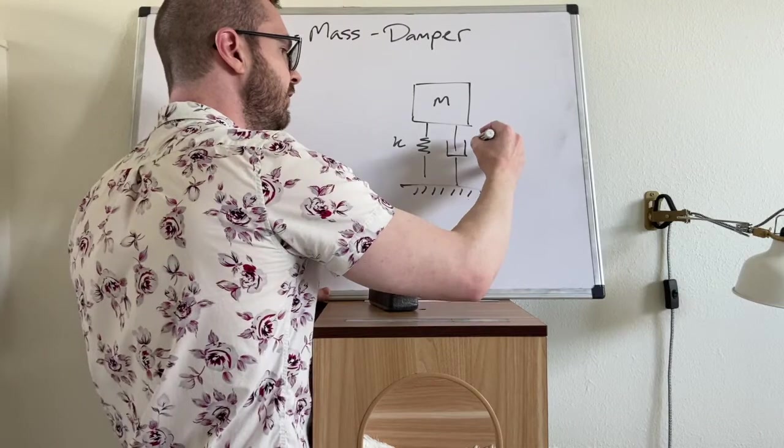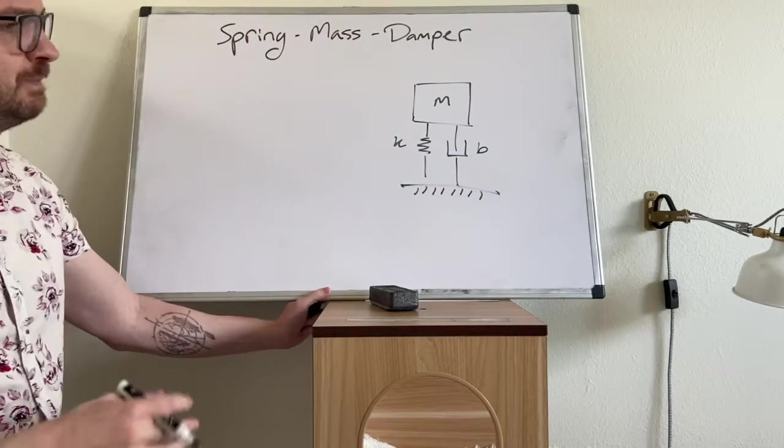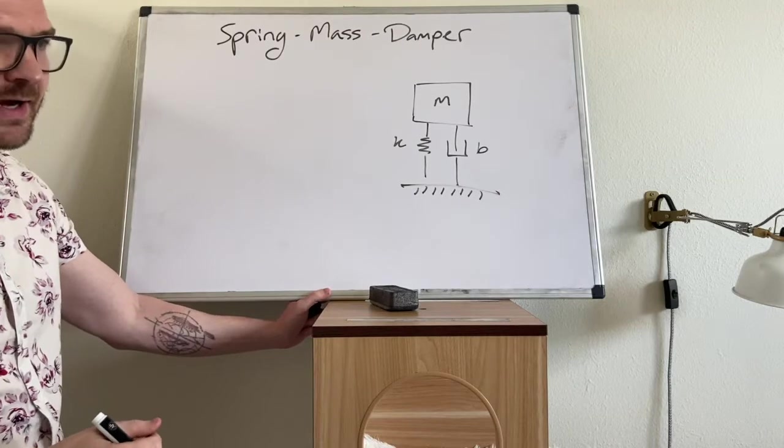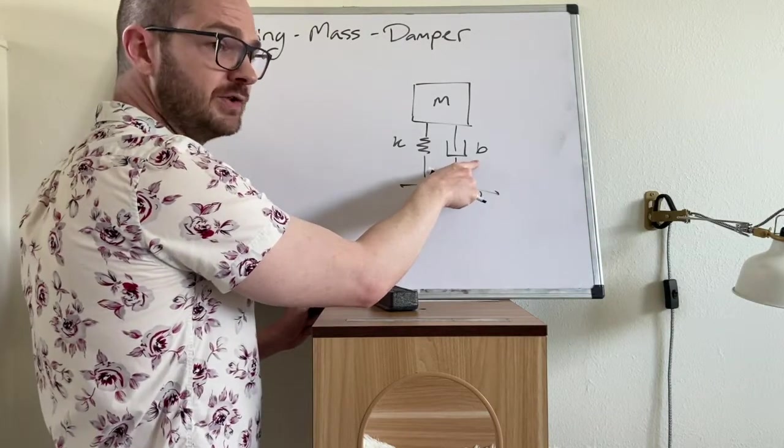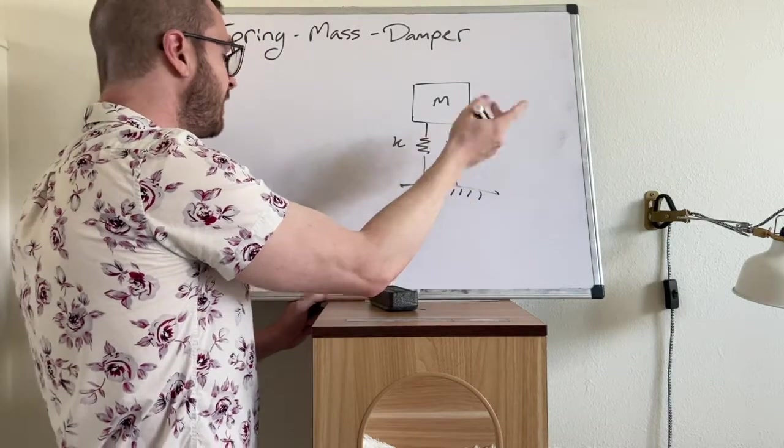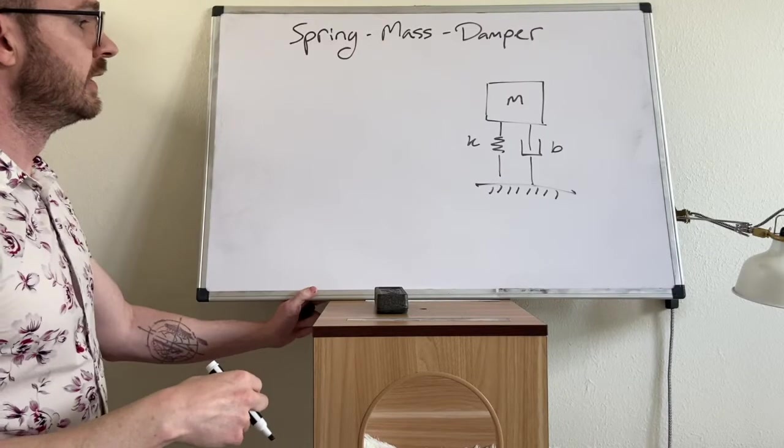And we're going to use a linear damper and sometimes depending on the text or who's doing the derivation you might see a damping coefficient use c. I prefer to use b but whatever you get the same answer.